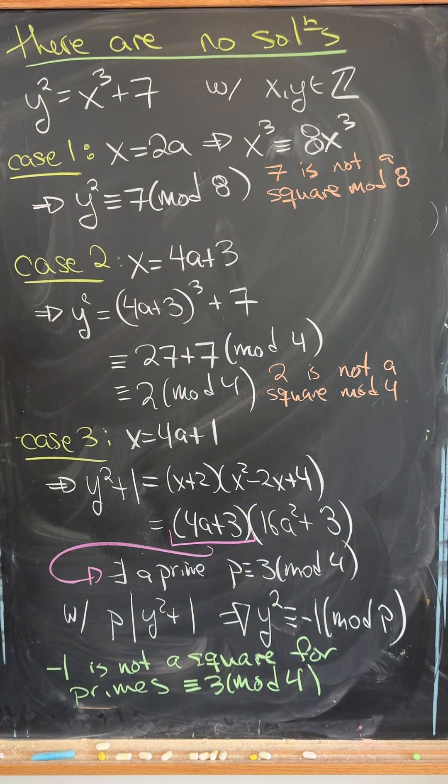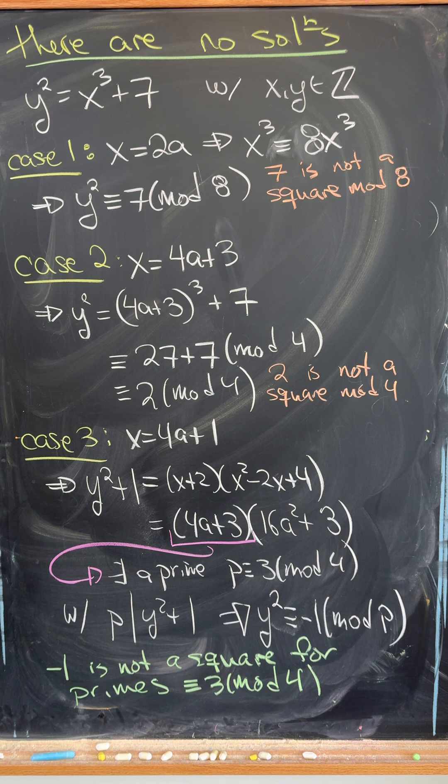Let's show that the equation y squared equals x cubed plus 7 over the integers does not have a solution.